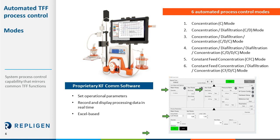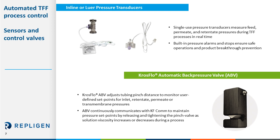For those who perform TFF, it is important to understand the pressure profiles of your process. Knowing the pressures within your system is a good way of tracking membrane performance and is also a key parameter for scaling up in the future. Inline or luer-connected single-use pressure transducers are key components of the KR2i and allow for real-time process monitoring of feed, permeate, and retentate pressures. Pressure alarms and stops are built-in to ensure safe operations and product breakthrough prevention. For example, a drastic drop in feed pressure may suggest a leak, and the system can warn users and stop the process immediately.